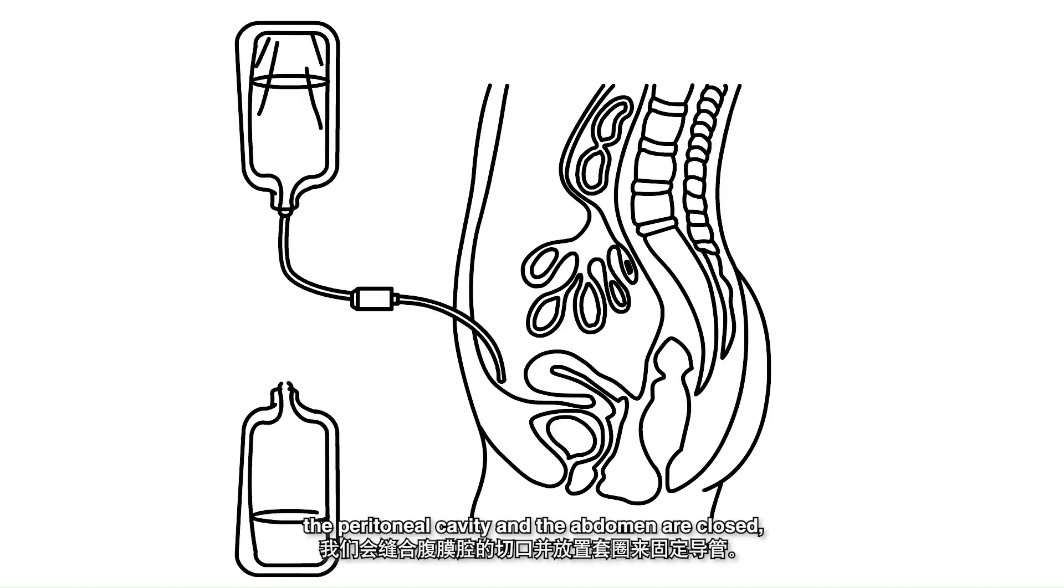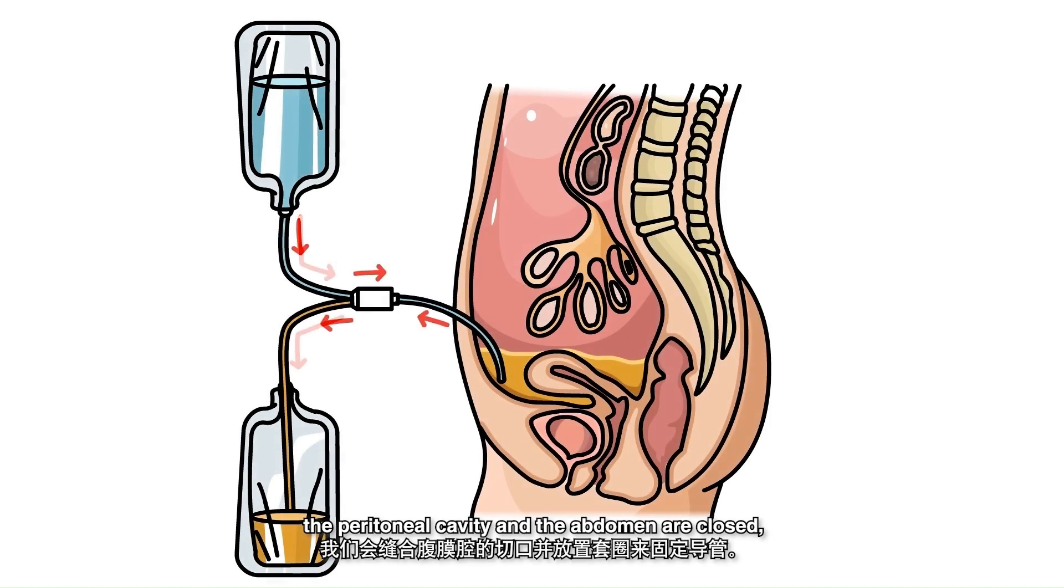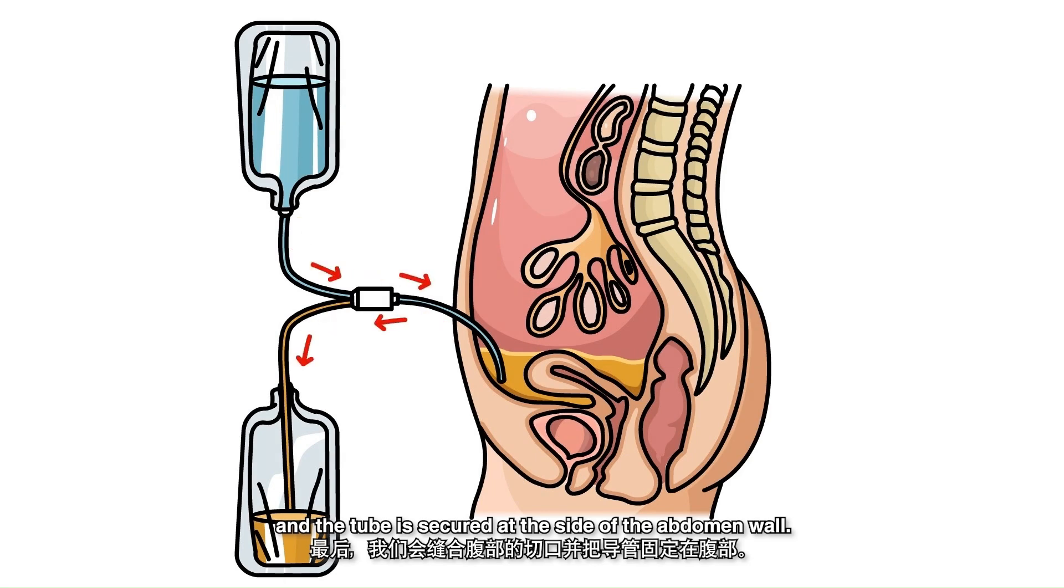Once this is done, the peritoneal cavity and the abdomen are closed, and the tube is secured at the side of the abdomen wall.